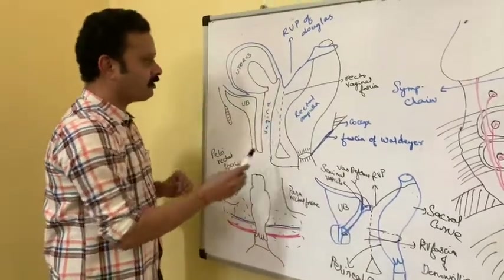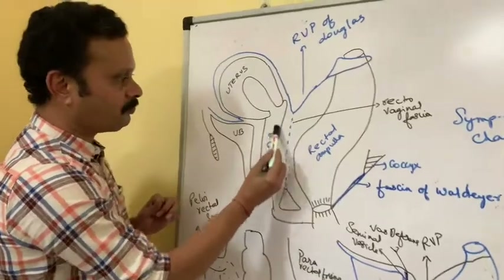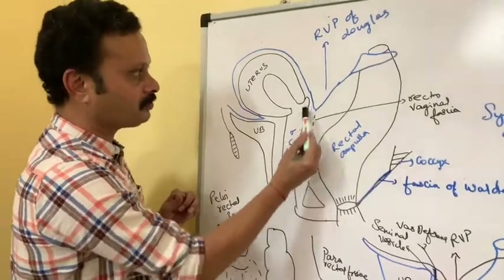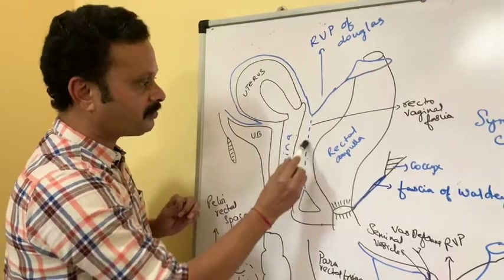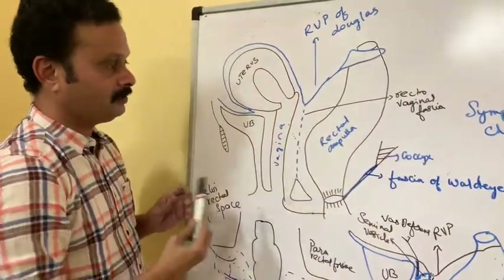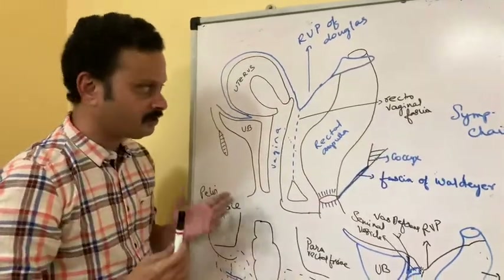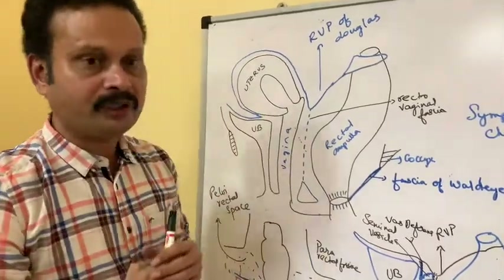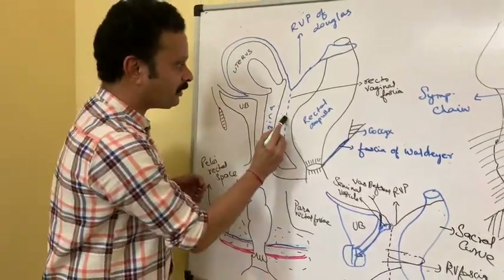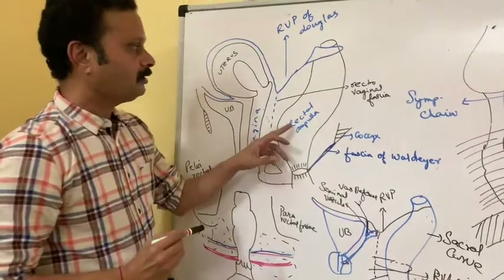In the female, the rectum is separated from the posterior wall of the vagina by a fascia called the rectovaginal fascia, which is formed by the union of the related fascia and separates the vagina from the rectum.